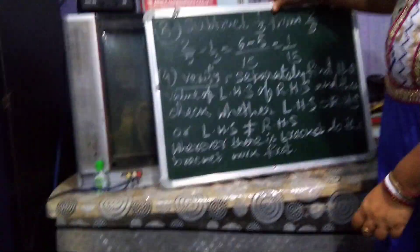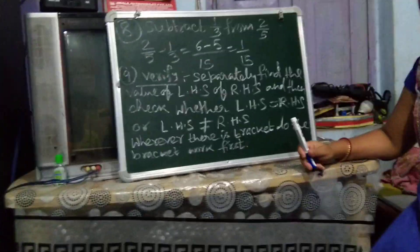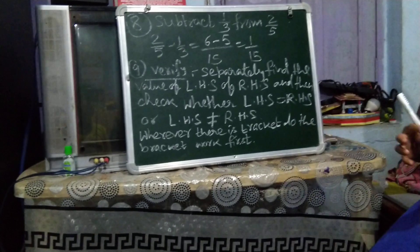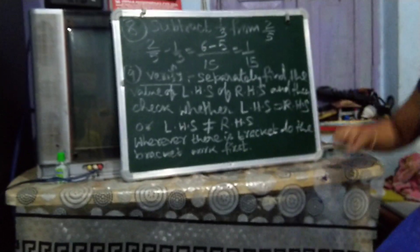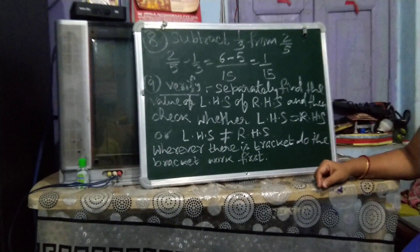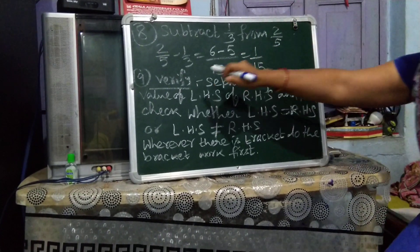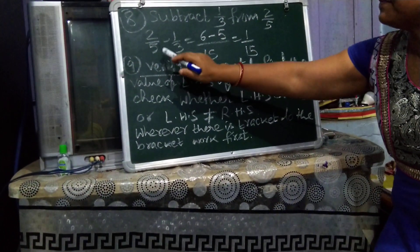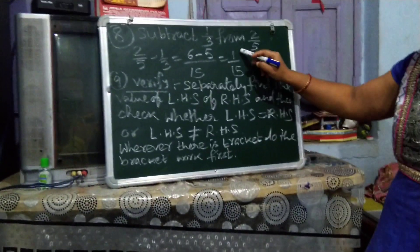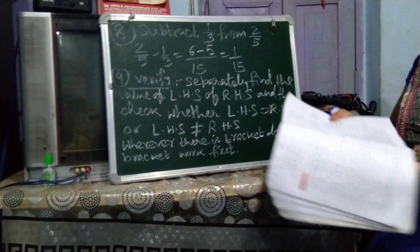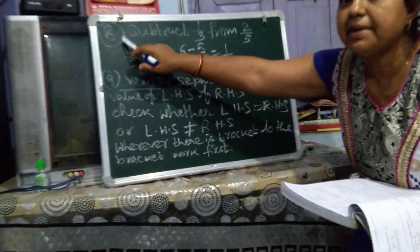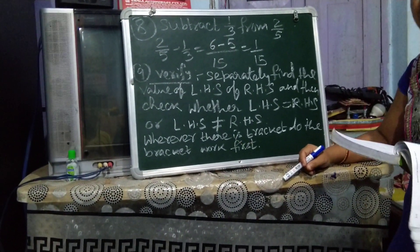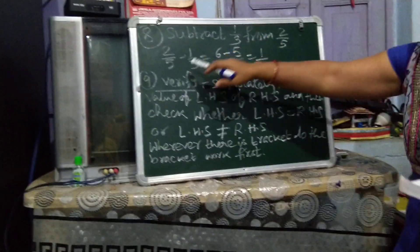Up to question 7 we have done, so from question 8 we will do today. Question 8 says: subtract 1/3 from 2/5. If I say subtract 2 from 10, we do 10 minus 2. So 'from' whatever is given, that one comes first. So 1/3 from 2/5 means 2/5 minus 1/3, which gives 1/15.